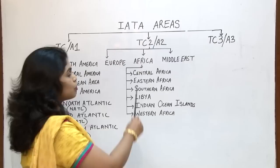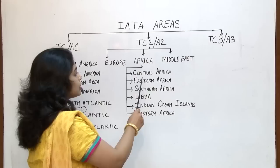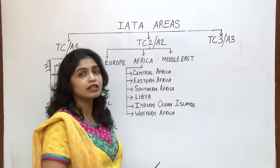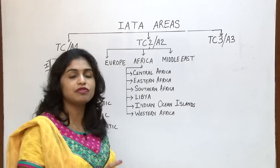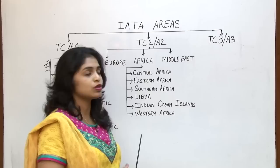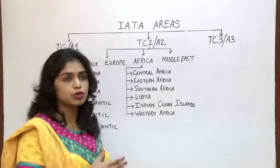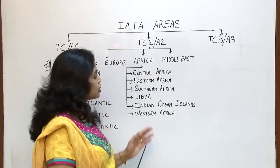There are 6 sub areas or zones which Africa gets divided into. First zone is Central Africa, which includes all countries in the central zone. Next is Eastern Africa, which includes countries on the eastern side of the continent. Further ahead we have Southern Africa — note it is Southern Africa, not South Africa, since South Africa is a country name. Next we have Libya which includes only one country. Indian Ocean Islands will include a group of islands placed in the Indian Ocean. And finally Western Africa, which includes all countries on the western zone of Africa.